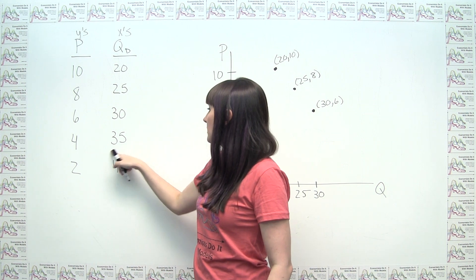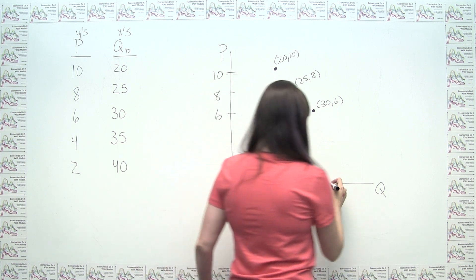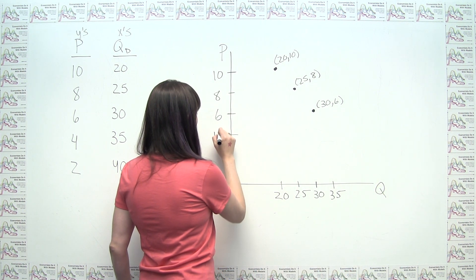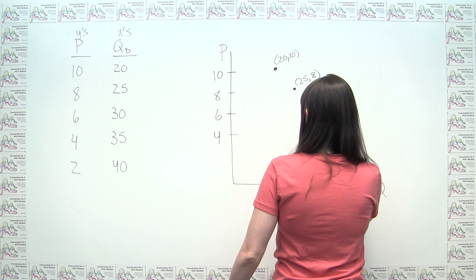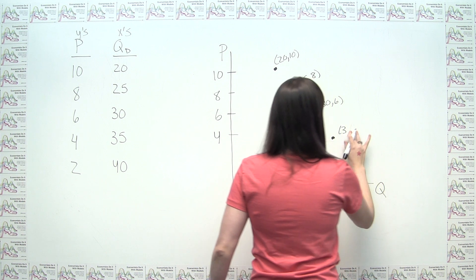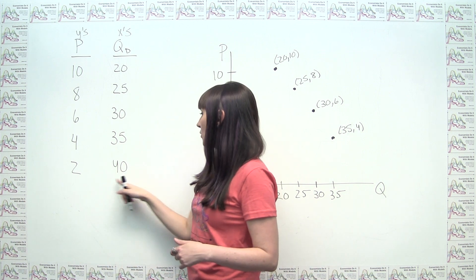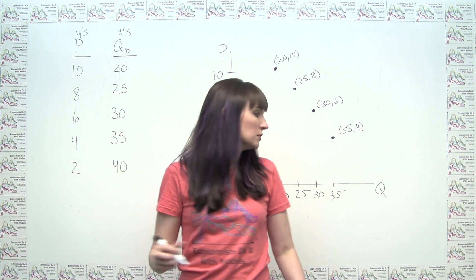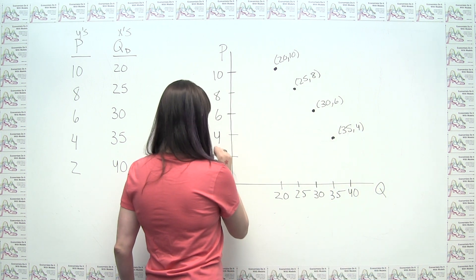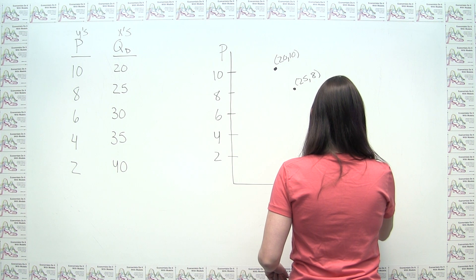Our next point is going to be 35 comma 4, because again, x variable, y variable. So we'd say here, maybe 35 is here. 4 is about here. Our next point is approximately here, at 35 comma 4. And last but not least, we have the point 40 comma 2. So maybe 40 is about here. And then 2 is here. So our last point would be about here.